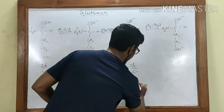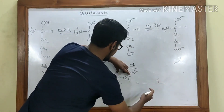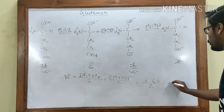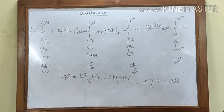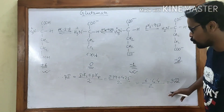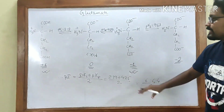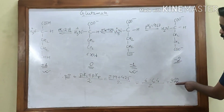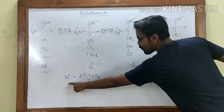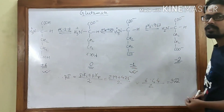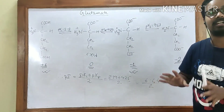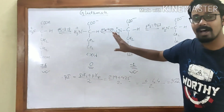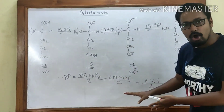So the pI of glutamate = (pK1 + pKr) / 2 = (2.19 + 4.25) / 2 = 6.44 / 2 = 3.22. At pH 3.22, glutamate will carry no net charge — that is the isoelectric point of glutamate.